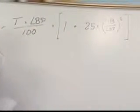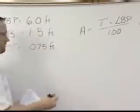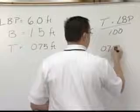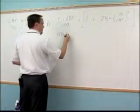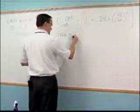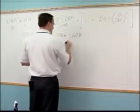So what we do is we simply substitute these terms, your length, beam and draft into this equation. So your draft is 0.75 feet times your length between perpendiculars of 6 feet divided by 100.